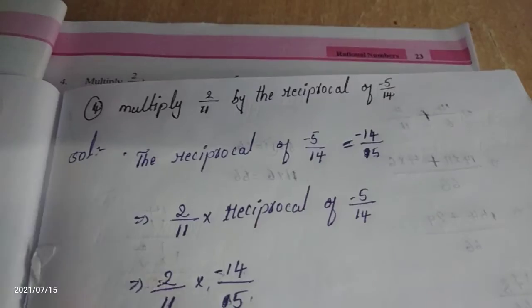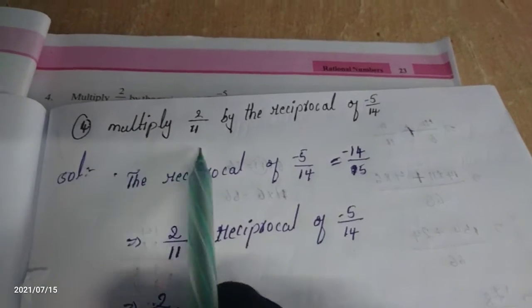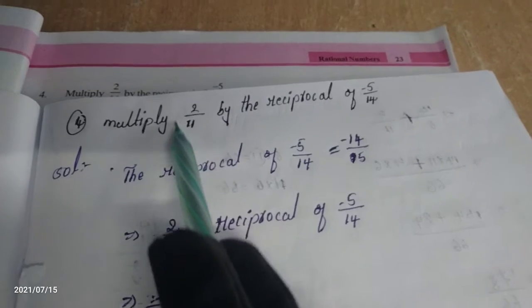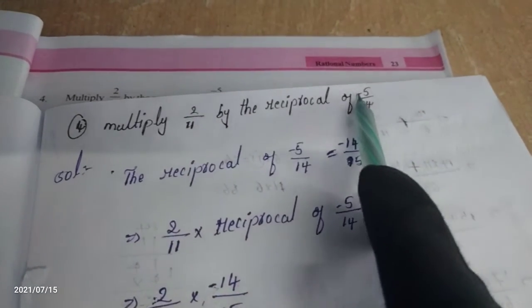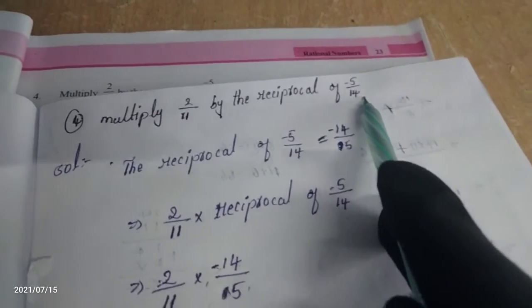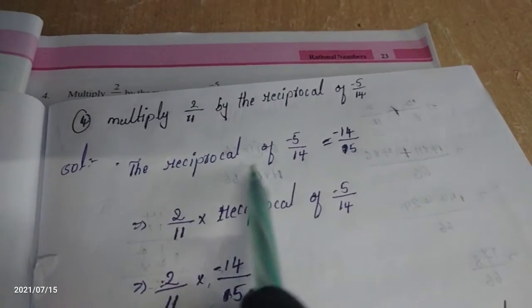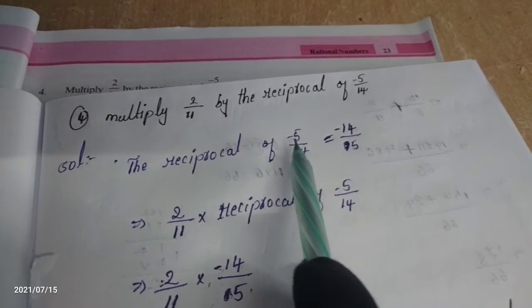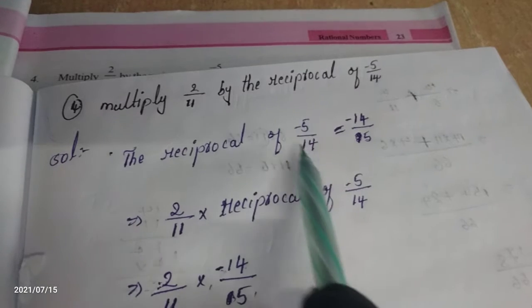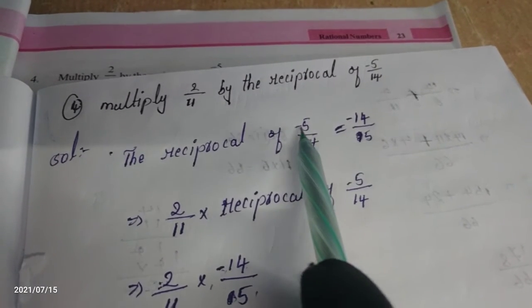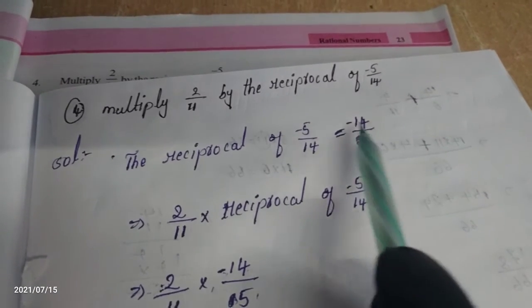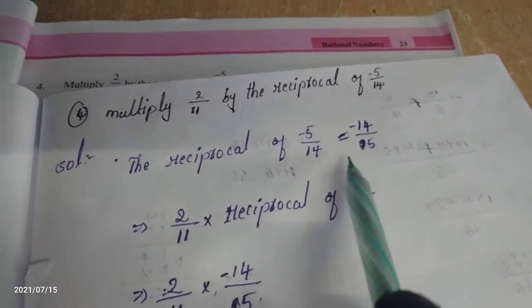Let's find the answer. First we have to find the reciprocal of minus 5 by 14. The reciprocal of minus 5 by 14 means we do the inverse — just reverse the number. Minus 5 by 14 becomes minus 14 by 5. Your denominator changes to numerator and numerator changes to denominator.